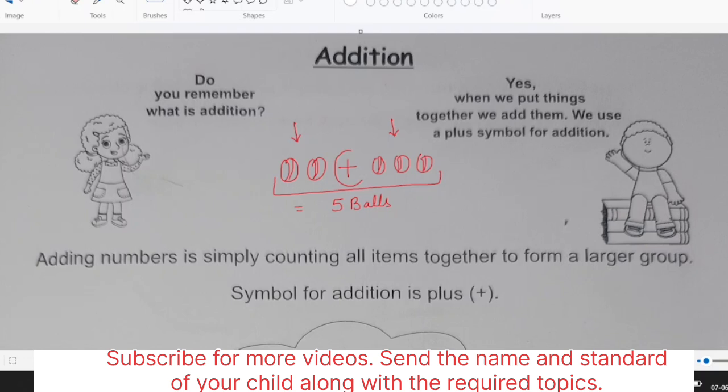So basically when we put the things together we add them and we use the symbol that is plus for the addition. This much we should be able to explain to our children so that they should be aware that whenever they have to add, they have to put all the things together and count all of them.